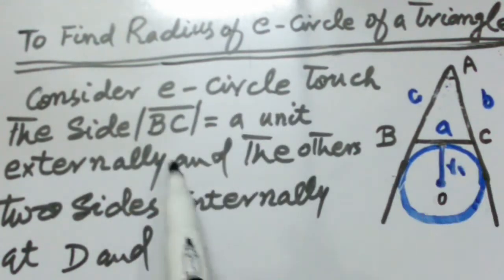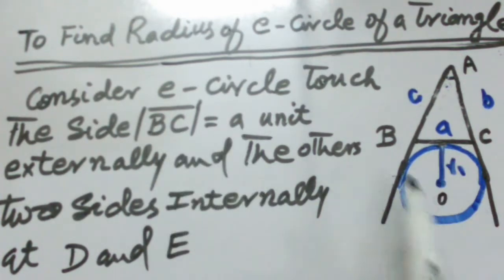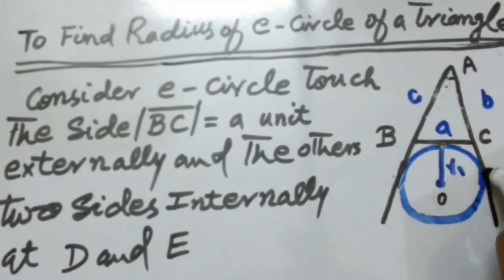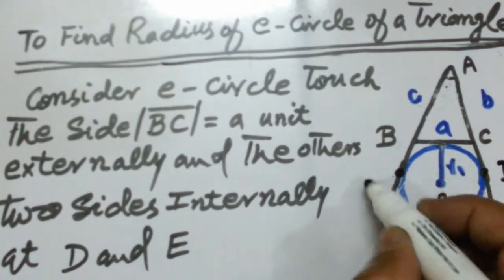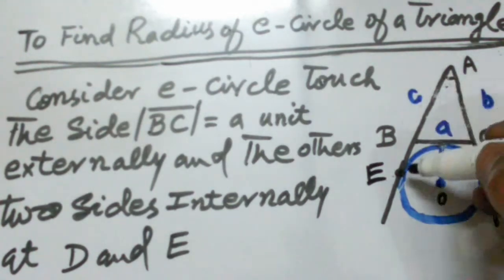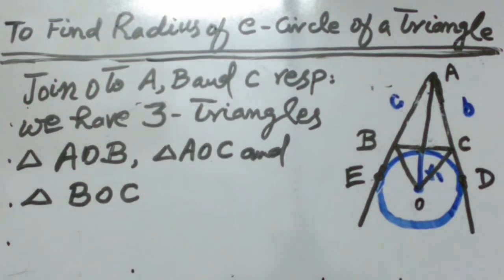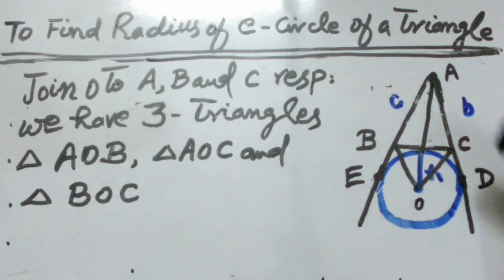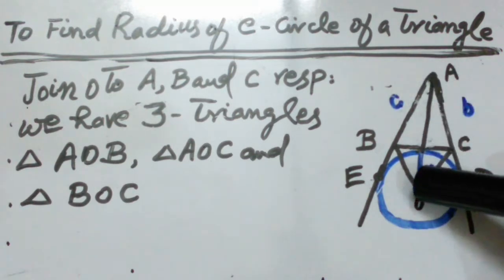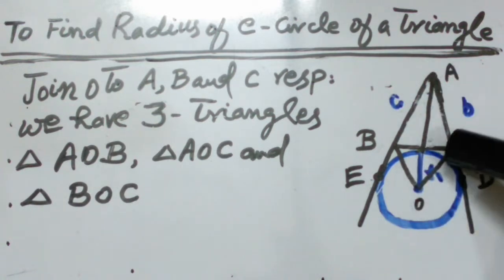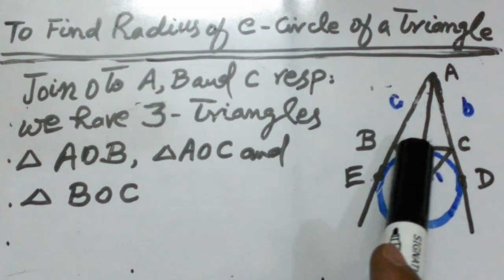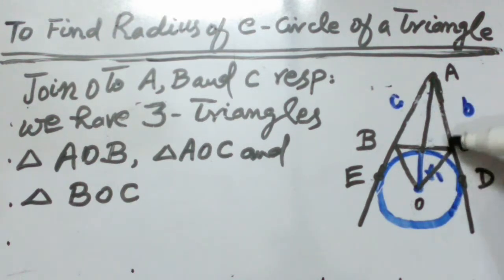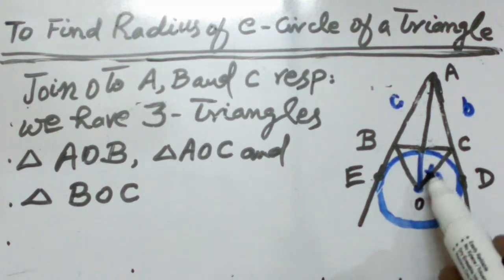Consider a circle which touches side BC externally at a point D, and the other two sides internally at points E and F when those sides are extended. Joining the center O to vertices A, B, and C gives three triangles: triangle AOB, triangle AOC, and triangle BOC.